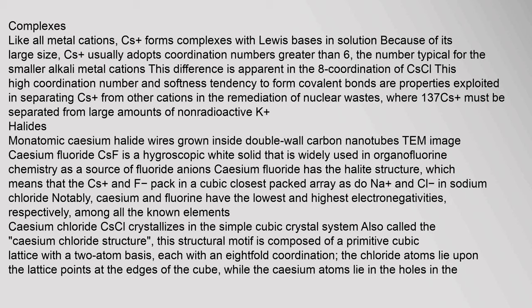Caesium fluoride (CsF) is a hygroscopic white solid widely used in organofluorine chemistry as a source of fluoride anions. Caesium fluoride has the halite structure, meaning Cs⁺ and F⁻ pack in a cubic closest-packed array, as do Na⁺ and Cl⁻ in sodium chloride. Notably, caesium and fluorine have the lowest and highest electronegativities, respectively, among all known elements. Caesium chloride crystallizes in the simple cubic crystal system, also called the caesium chloride structure.